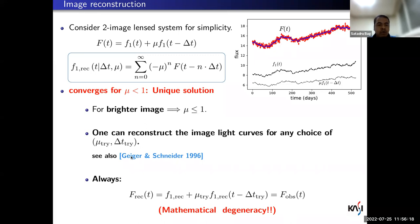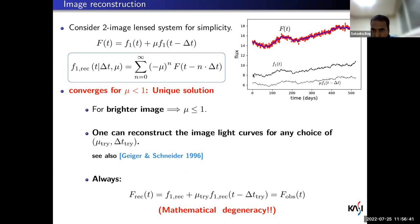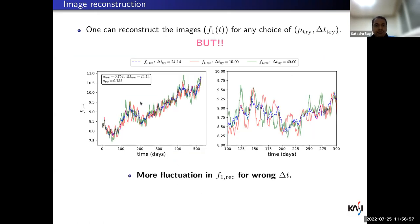This points to a mathematical degeneracy: any choice of μ and Δt is allowed. This was pointed out two decades ago; they concluded that without additional information, proceeding forward is impossible. But let us check: given a joint light curve, any choice of μ and Δt gives a unique solution. However, that solution recovers the underlying image light curve only if μ and Δt match the truth. With wrong values, you get different reconstructed light curves, but all recover the joint light curve exactly.